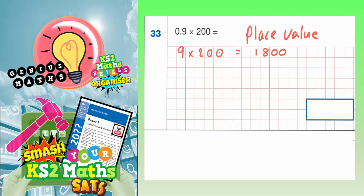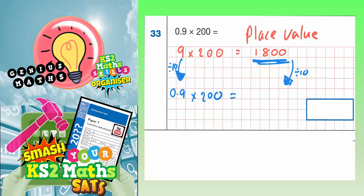But if you look at the original calculation, it wasn't 9 — it was 0.9 times 200. That's the only difference between what we've already got an answer for, 1800, and the original question. To get from 9 to what we actually need, 0.9, we've got to divide it by 10. So our answer would also need to be divided by 10. If we do 1800 divided by 10, we just knock one zero off, giving us 180. So our final answer is 180.